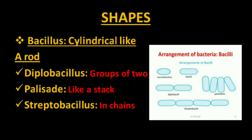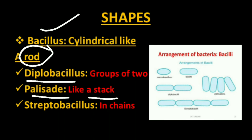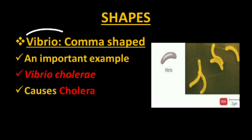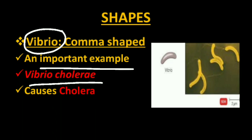Bacteria can also be rod-shaped, called bacillus. In groups of two they are diplobacillus, in a stack they are palisade, and in chains they are streptobacillus. When spiral or coil-shaped, they are called spirillum — a common example is Treponema pallidum which causes syphilis. The last shape is comma-shaped, called vibrio — an important example is Vibrio cholerae, which causes cholera, a deadly disease.